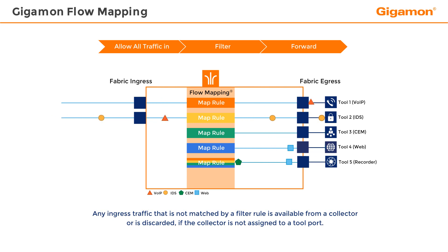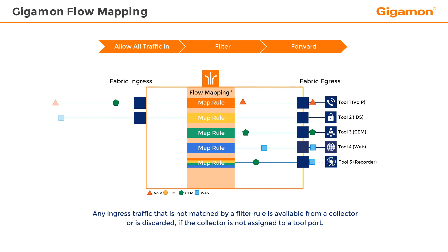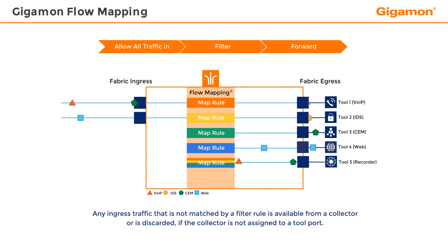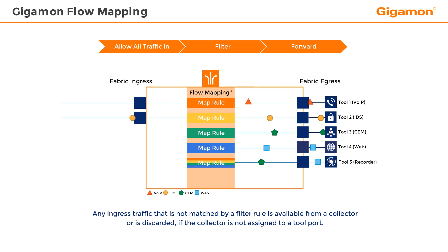Any ingress traffic that is not matched by a filter rule is available from a collector — the logical else rule. If the collector is not assigned to a tool port, then the traffic is discarded. However, security is often very interested in this unmatched or unexpected traffic.